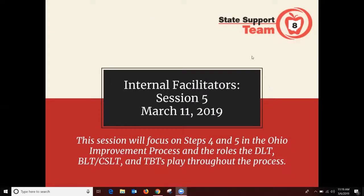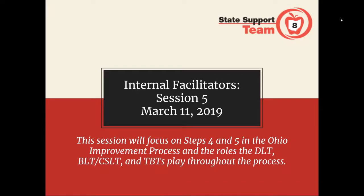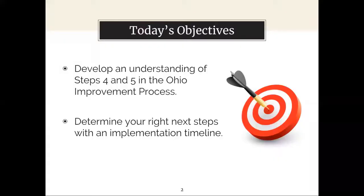Welcome to session 5. This session will focus on steps 4 and 5 of the updated Ohio Improvement Process and the roles the DLT, BLT, or CSLT and TBTs play throughout the process. In today's session we will develop an understanding of steps 4 and 5 in the Ohio Improvement Process, consider various resources and how they might be used, and determine the next right steps for an implementation timeline.